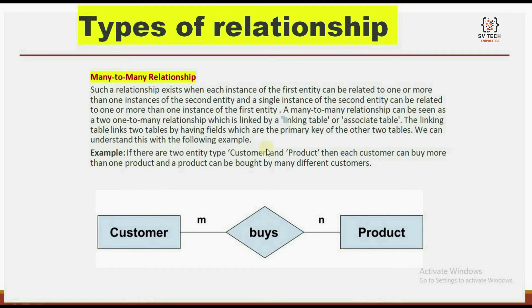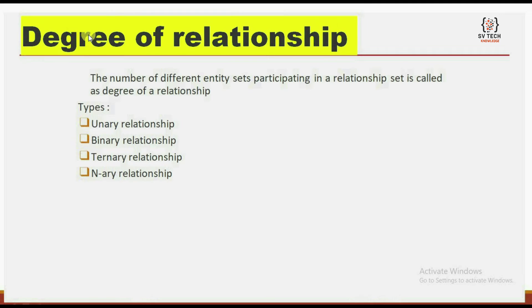If there are two entity types — customer and product — then each customer can buy more than one product, and a product can be bought by many different customers. This illustrates the degree of relationship. The number of different entity sets participating in a relationship set is called the degree of relationship. We have mainly four types of degree of relationship.